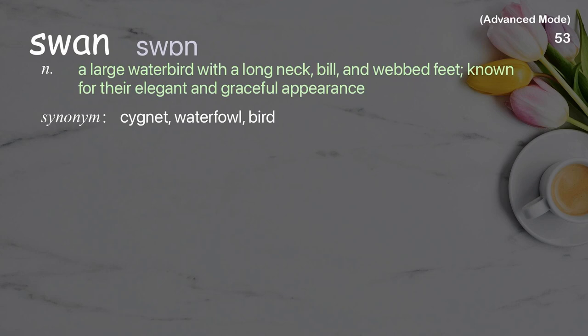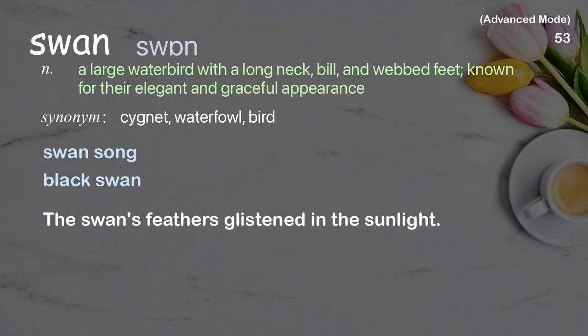Swan: a large water bird with a long neck, bill, and webbed feet, known for their elegant and graceful appearance. Examples: swansong; black swan. The swan's feathers glistened in the sunlight.